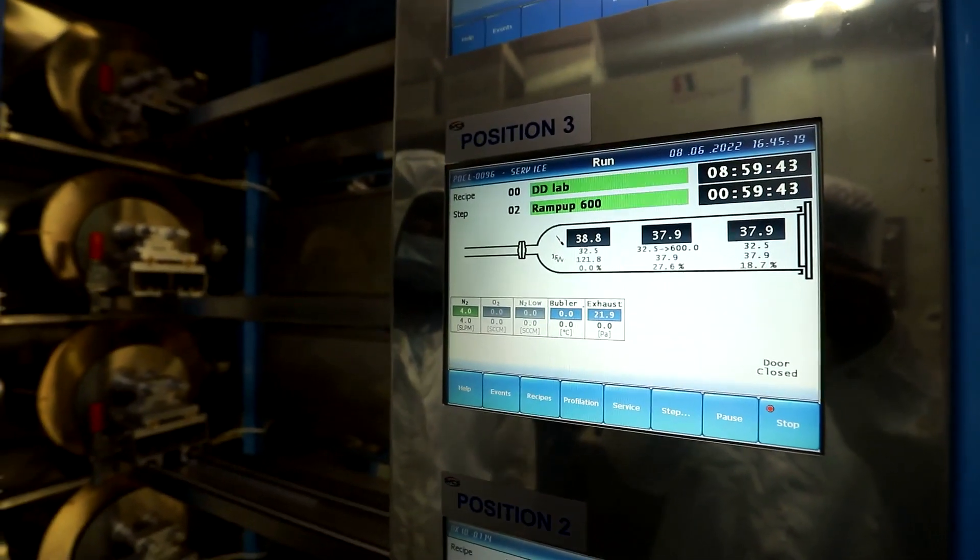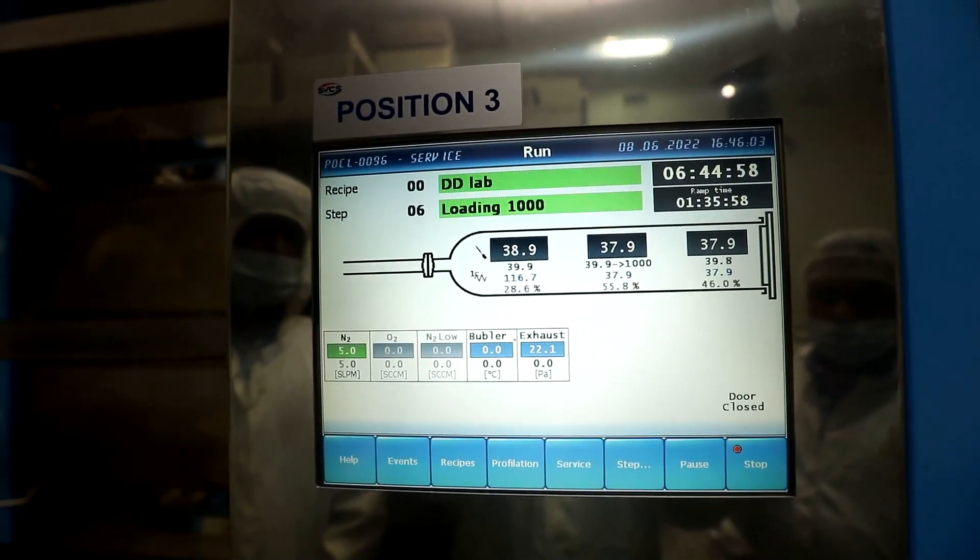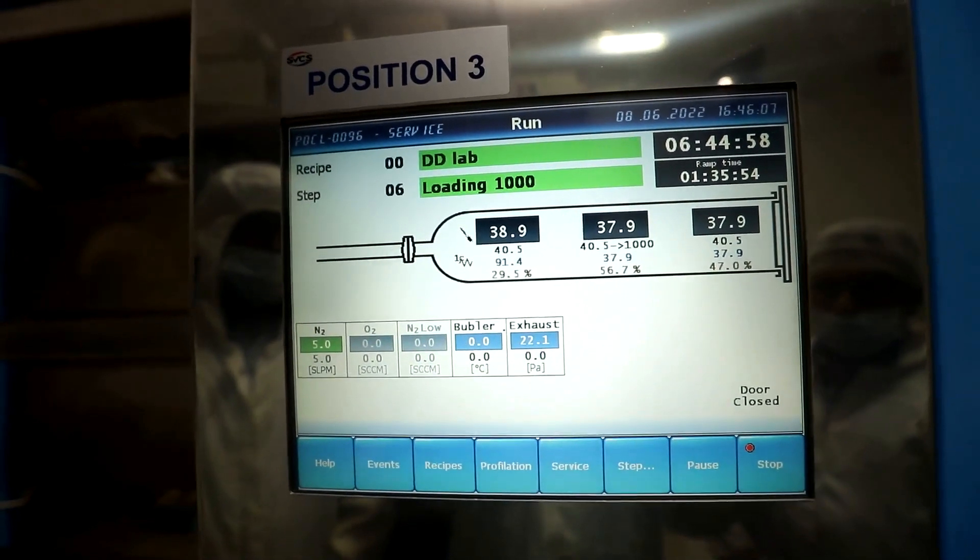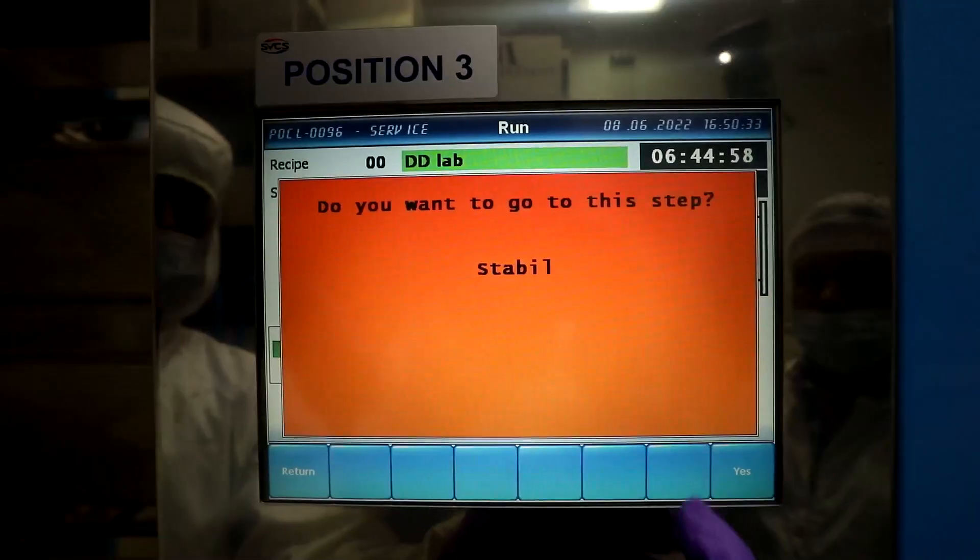Now we have to ramp up the temperature to 1000 degrees Celsius. It will again take around one hour. During this time, nitrogen is passed inside the process chamber. The boiler or bubbler is heating simultaneously.